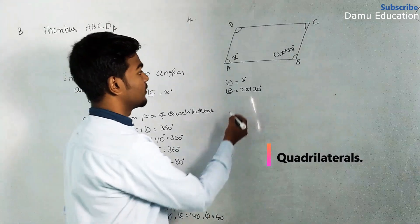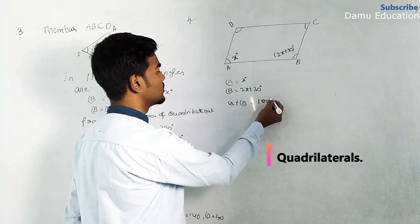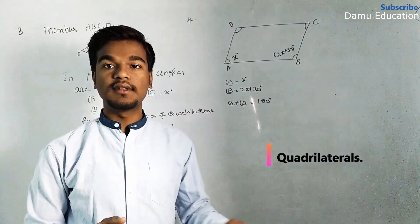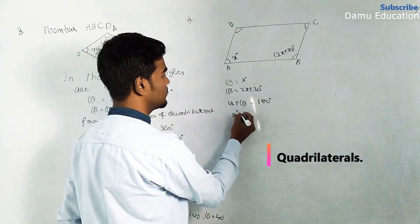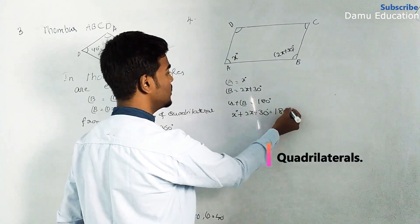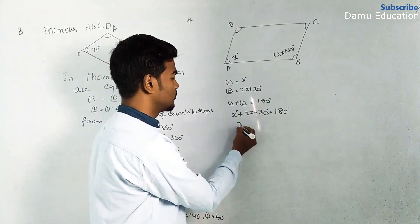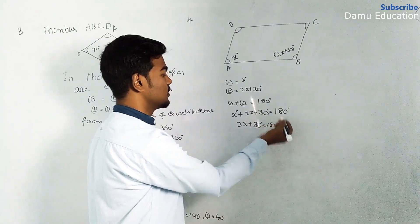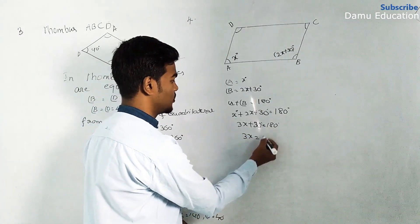Here angle A plus angle B equals 180 degrees, because the sum of two adjacent angles in a parallelogram is 180 degrees. Substituting: x plus 2x plus 30 equals 180 degrees. So 3x plus 30 equals 180 degrees, therefore 3x equals 150 degrees.